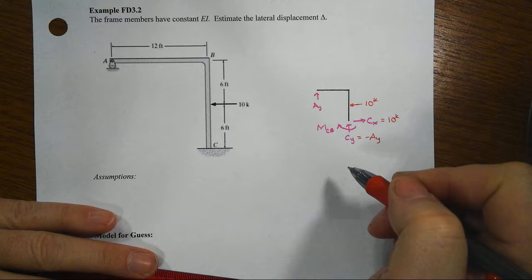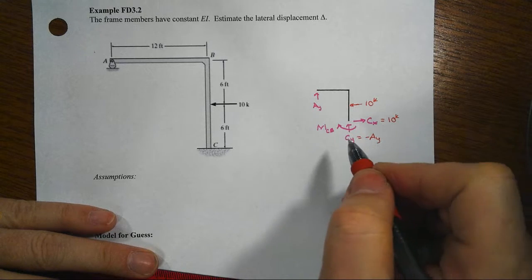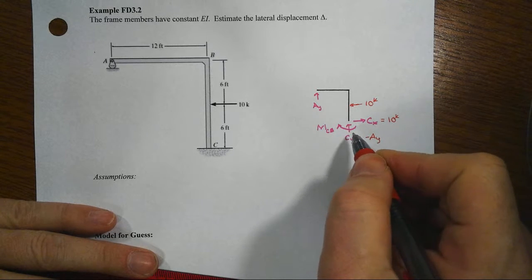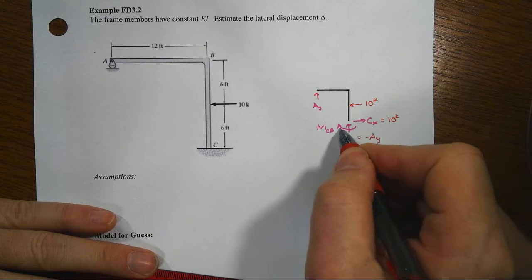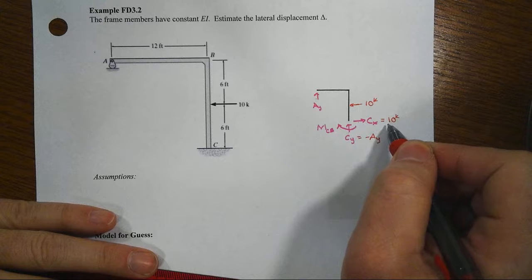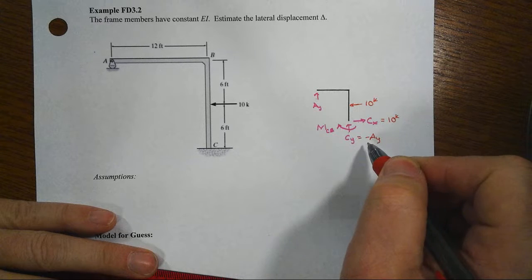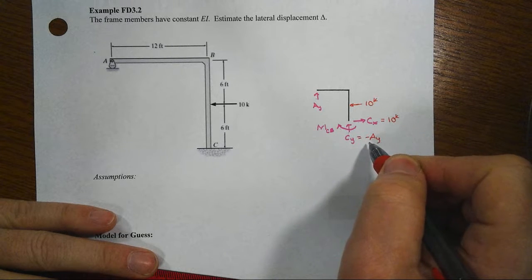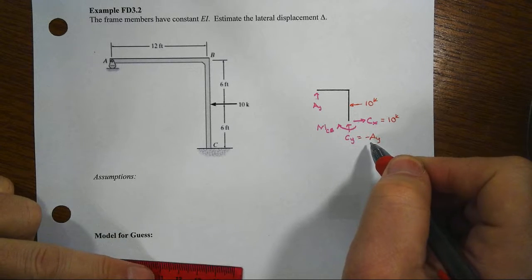But an even more basic one here is that we've got one, two, three, four reaction components. We used one of the equations of equilibrium to justify CX and we also looked at another one to look at the relationship between AY and CY.